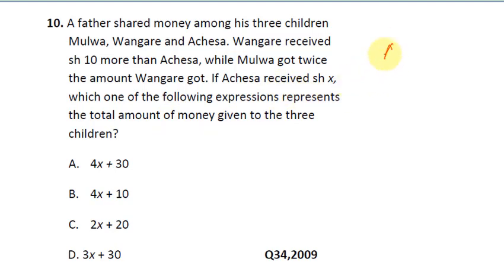Let's say Achesa got x. Then Wangare received 10 more than Achesa, that's 10 plus x. While Mulwa got twice the amount Wangare got, that's 2 times (10 plus x).